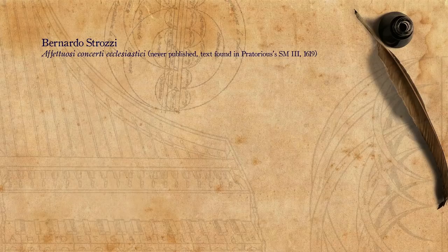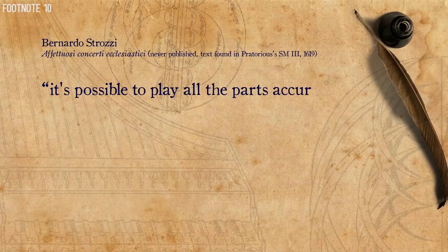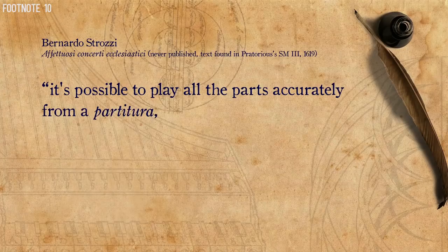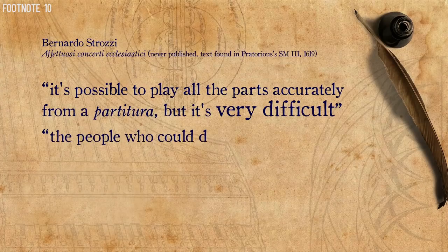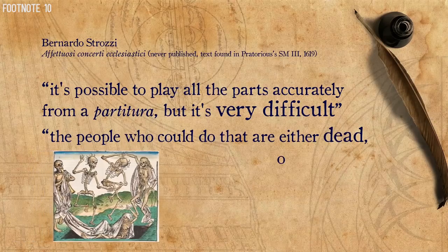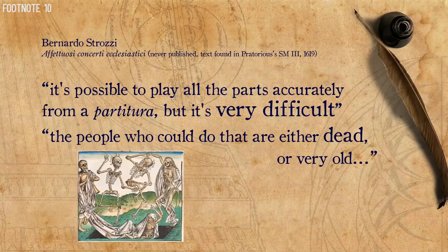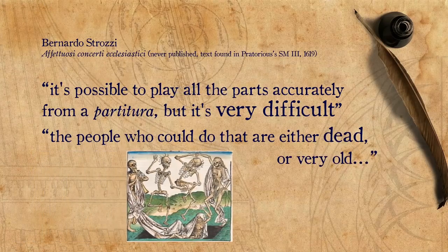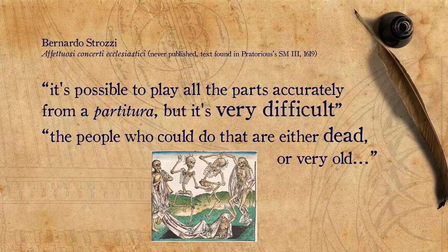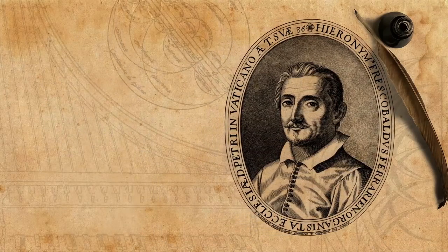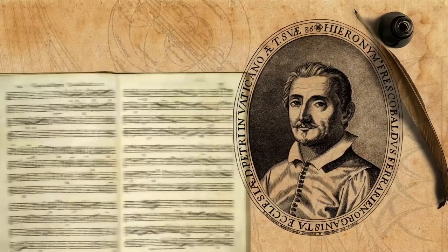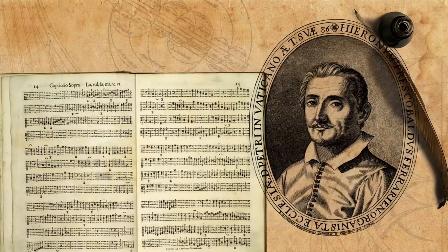In 1619, Bernardo Strozzi wrote that it's possible to play all the parts accurately from a partitura, but it's very difficult, and that the people who could do that are either dead or very old. The famous composer and keyboard player Girolamo Frescobaldi, excluding his toccatas, published all his music in partitura format.